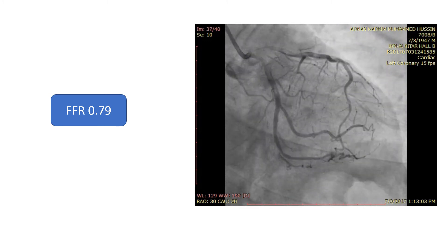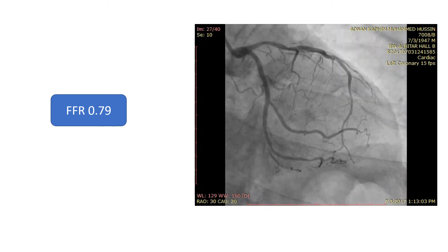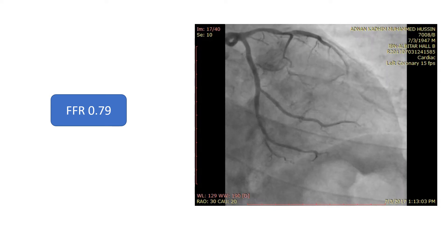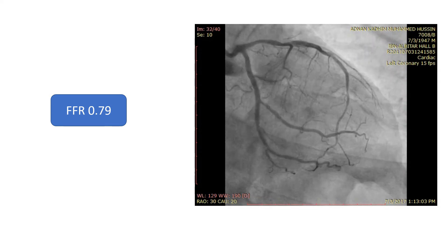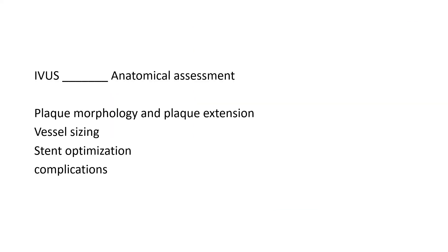So we decided to use IVUS, which had the additional value of assessing anatomy. IVUS is important to assess anatomy and FFR to assess physiology. IVUS can show plaque morphology and plaque extension, assess sizing of the vessel, and with PCI, can assess optimization and identify any complications.